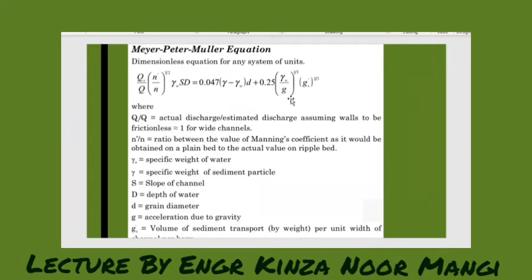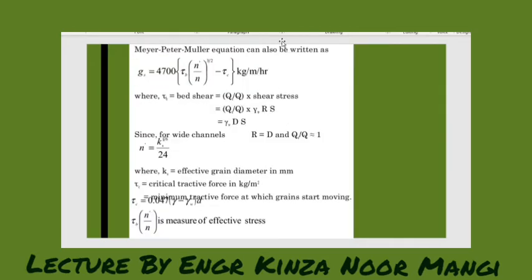Another way of writing this equation is gs = 4700[τ0(n'/n)^(3/2) - τc] kg/m·hr. Now here two things are coming - one is τb, another is τc. Now τc is the critical shear, critical tractive force.